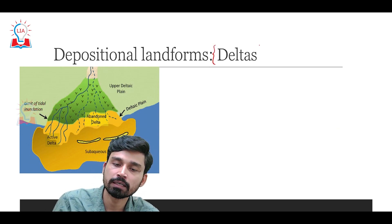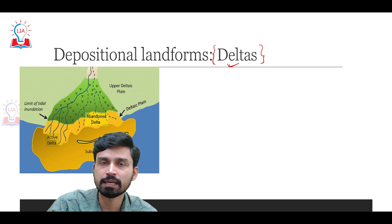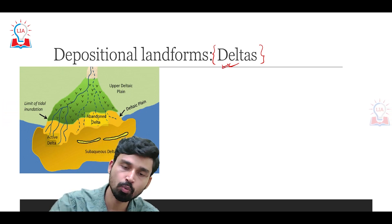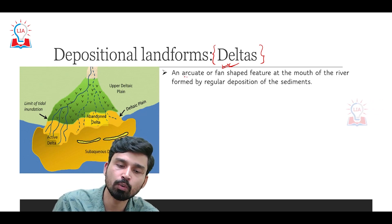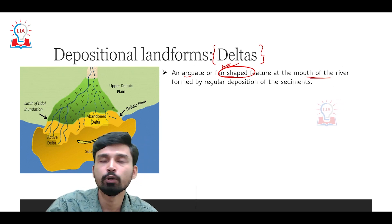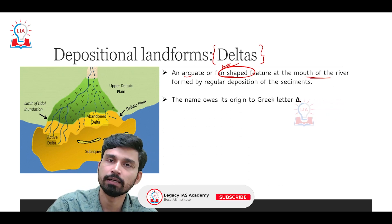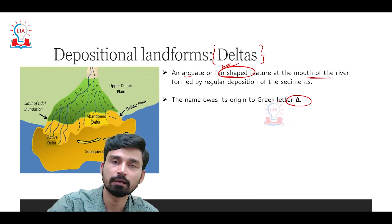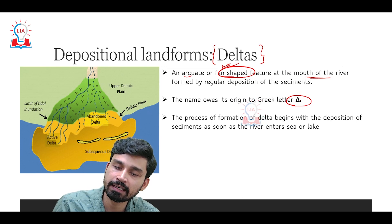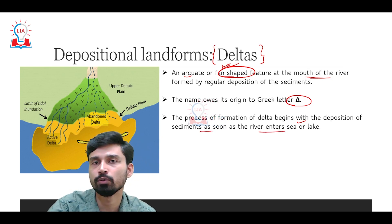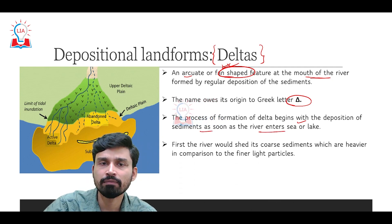The most important landform the river forms in its lowermost course before entering the sea is the delta. A delta can be defined as an arcuate or fan-shaped feature which develops at the mouth of the river due to regular deposition of sediments. The name delta originates from the Greek letter delta because the shape of a delta resembles this Greek letter. The process of delta formation begins when deposition of sediments occurs as soon as the river enters a sea region or sometimes even a lake.